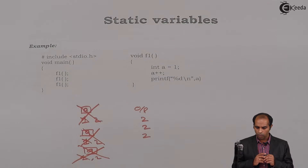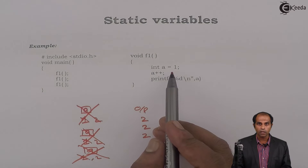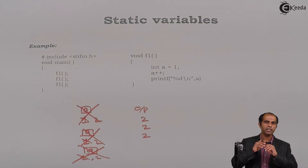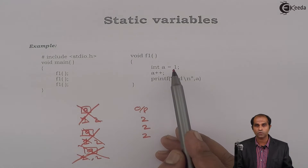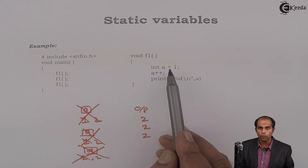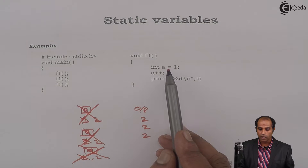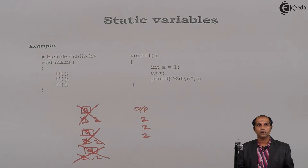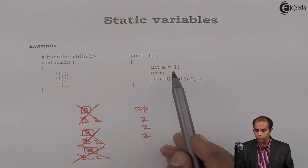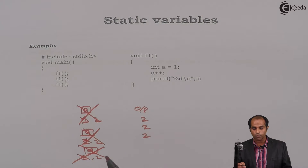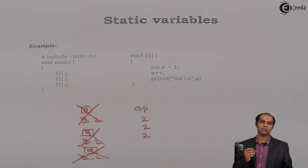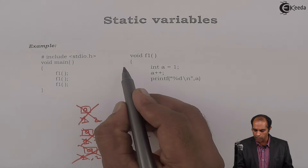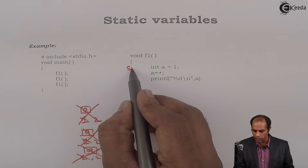Now, why don't we make this particular variable partially global? Why don't we make this int A initialized to 1 only once and destroyed at the end of the program? Why don't we make variable A possess the properties of both local as well as global variables? For that, I will use the keyword static.